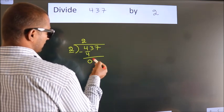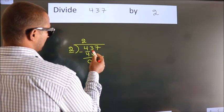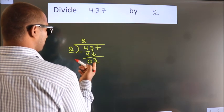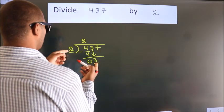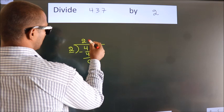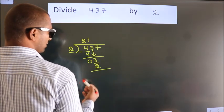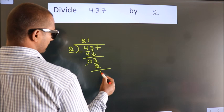After this, bring down the beside number. So, 3 down. So, 3. A number close to 3 in 2 table is 2 1's, 2. Now, we subtract. We get 1.